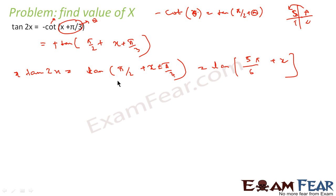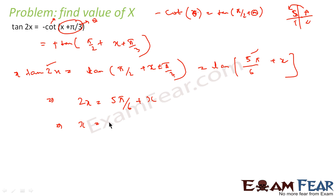We can also equate because both sides are tan. So we get 2x = 5π/6 + x, which gives x = 5π/6. This is our principal solution.